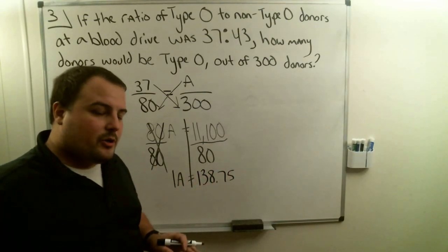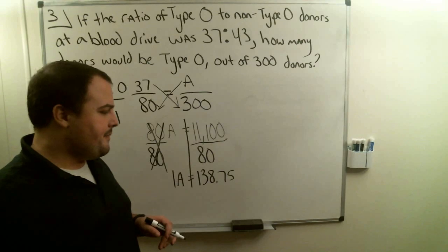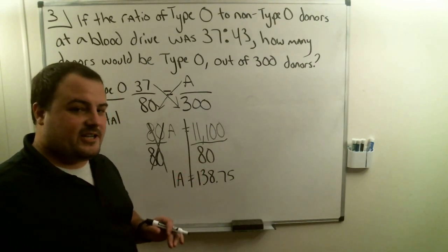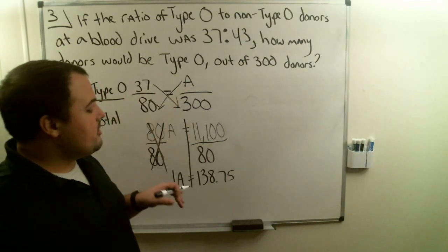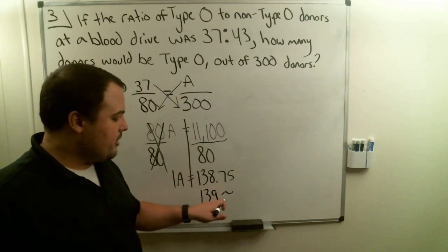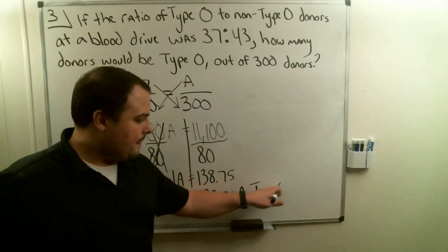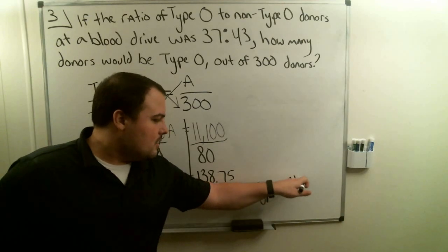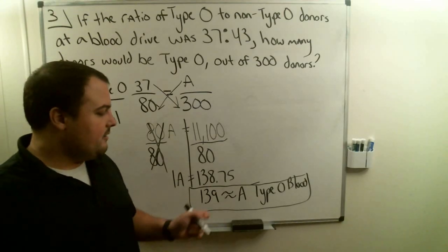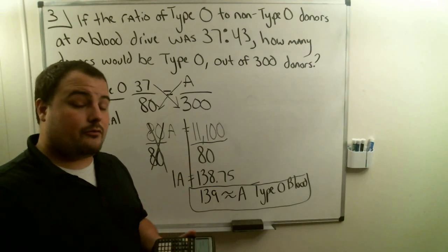Now we're talking about people here. Do you think they're going to let us say we got 138 and 0.75 of a person? Probably not. So what we're going to do is round this number up or down. So if we had 300 donors, we could say that about 139 would be type O blood. Since we know A is approximately 139, that means that's how many donors would be type O if we had 300 people at a blood drive.